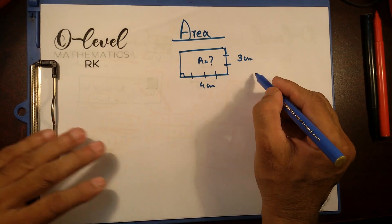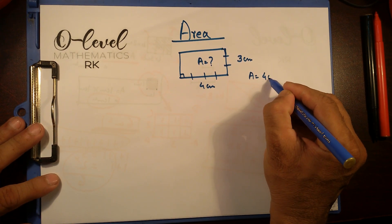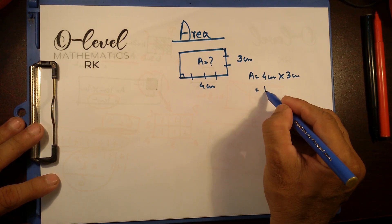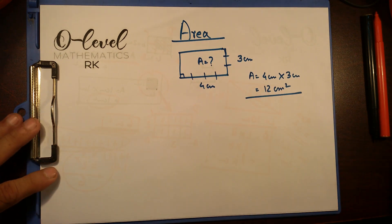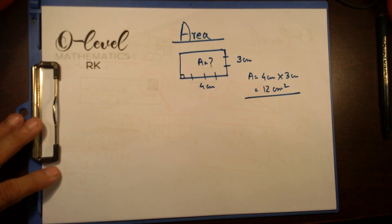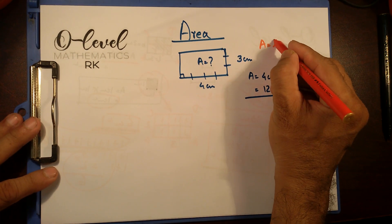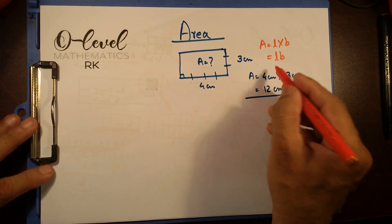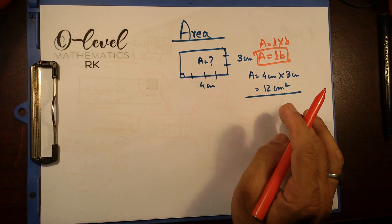Most of you will be able to say that. The area of this particular shape is 4 cm times 3 cm, that's going to be 12 square centimeters. You have learned in school that area of a rectangle is length times breadth — sometimes written as length into breadth. But what is area?